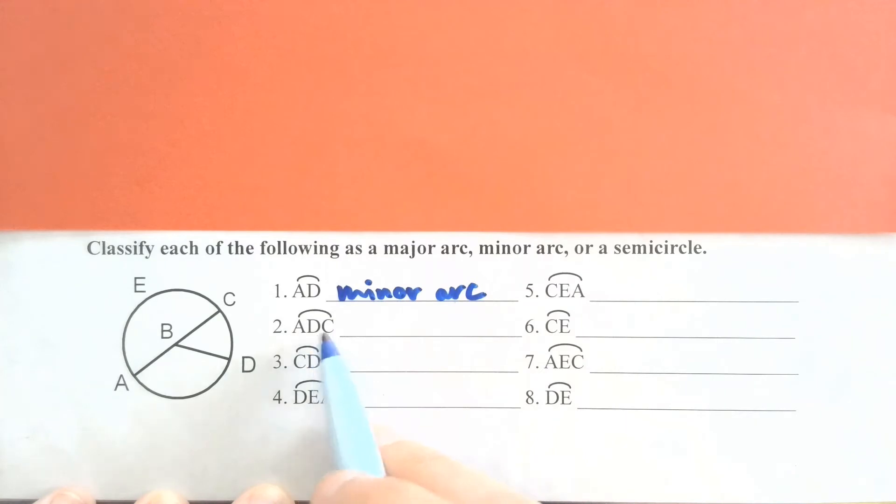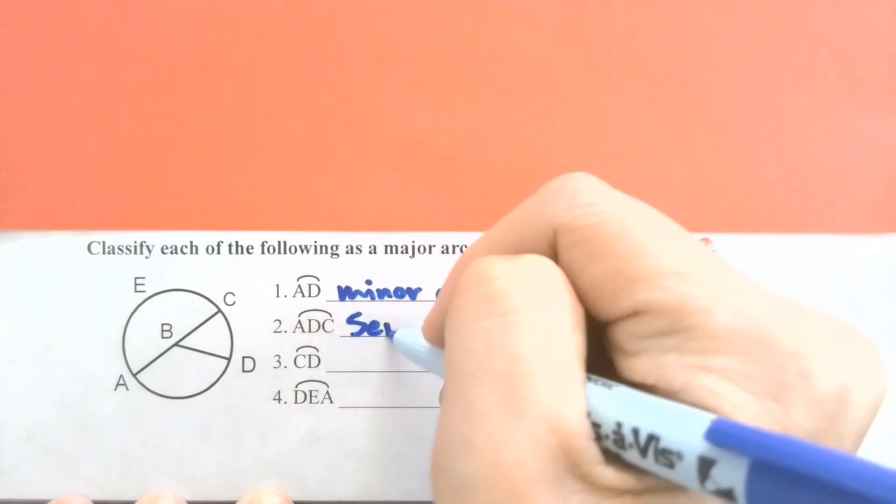If we're looking at the arc ADC, remember, I want to follow those letters in order. A, then D, then C. So that would be a semicircle.